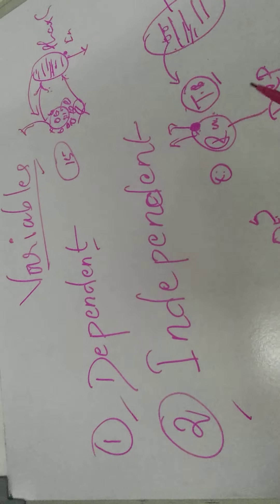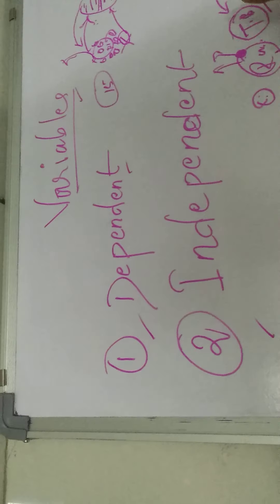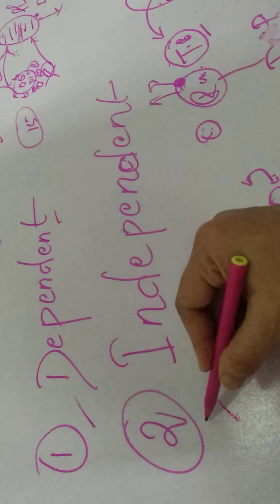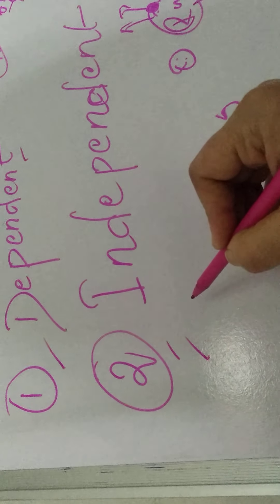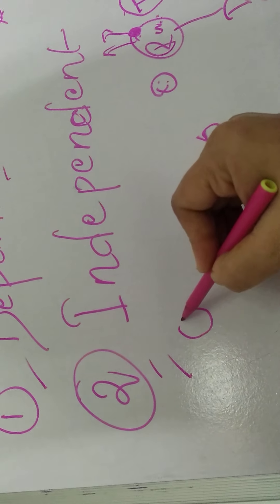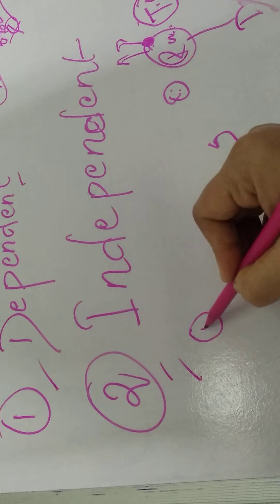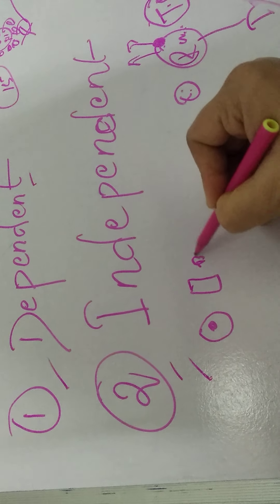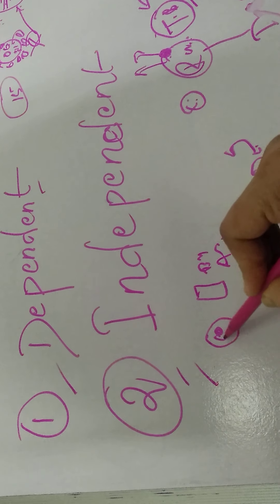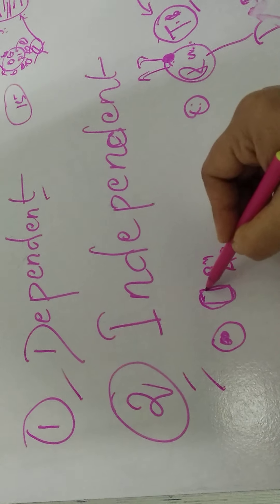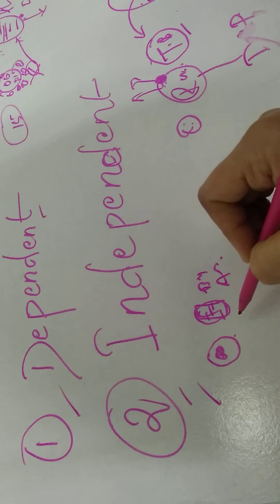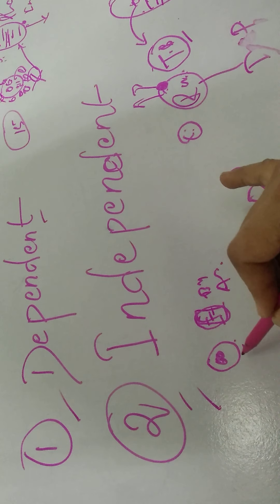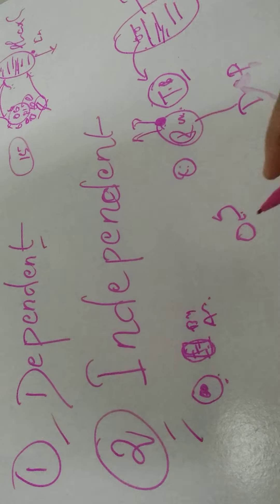Now, what is an independent variable? You all do jobs. How do you go to college or a hospital? You are dependent on vehicles like a bus or auto. So you people are the dependent variables, and the auto or vehicles provided for you are the independent variables.